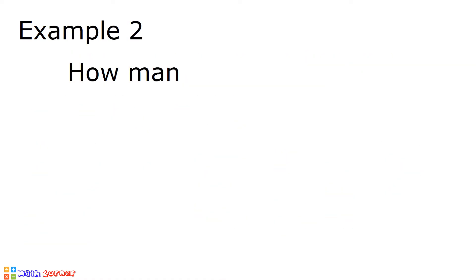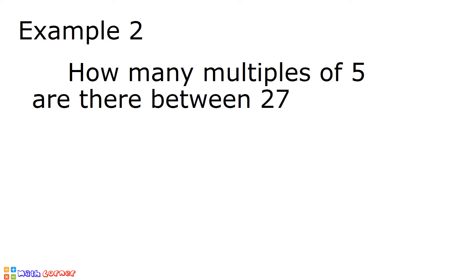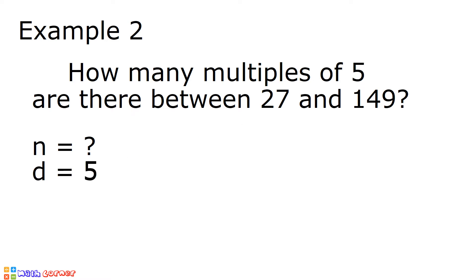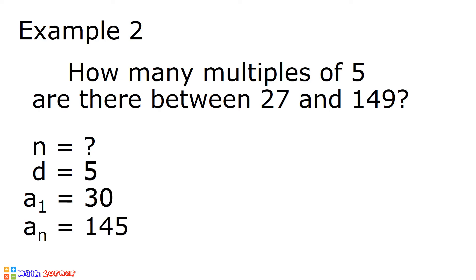Example number 2. How many multiples of 5 are there between 27 and 149? Again, in this problem, we are asked to solve for the value of n. The common difference is equal to 5 since our sequence is a multiple of 5. The first term, or a sub 1, is the lowest number between 27 and 149 that is a multiple of 5, and that number is equal to 30. The last term, or a sub n, is the highest number that is a multiple of 5 between 27 and 149, and our a sub n is equal to 145.